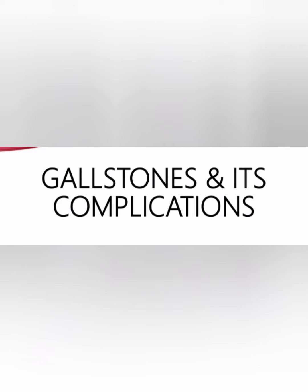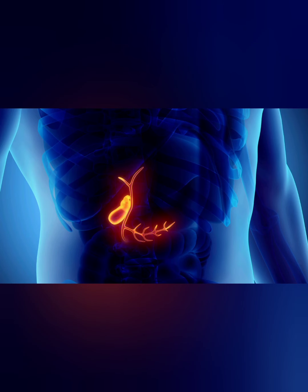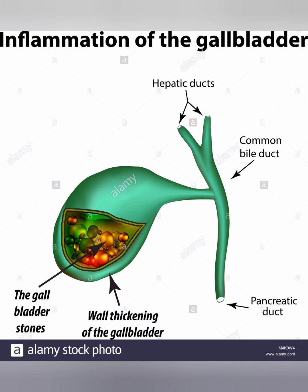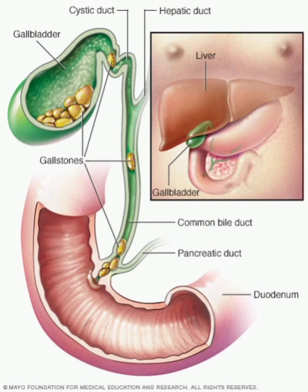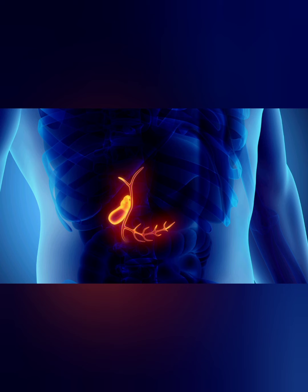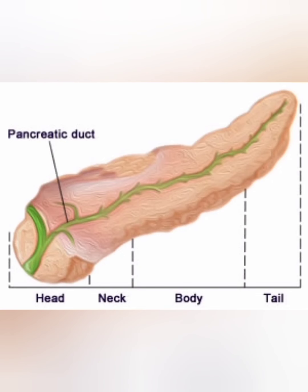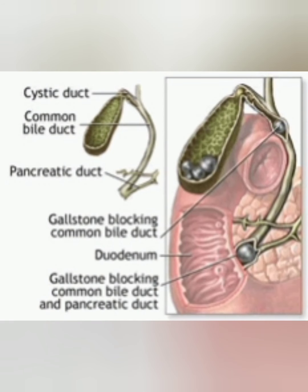Complications. 1. Inflammation of the gallbladder. Gallstones that become lodged in the neck of the gallbladder can cause inflammation of the gallbladder. 2. Cholecystitis. Cholecystitis can cause severe pain and fever. 3. Blockage of the pancreatic duct. The pancreatic duct is a tube that runs from the pancreas. 4. Gallstones can cause a blockage in the pancreatic duct, which can lead to inflammation of the pancreas.